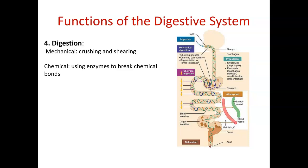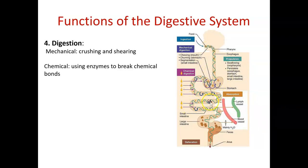We have digestion, and there are two types. Mechanical digestion is physically breaking food down — when our teeth chew food or when our stomach churns. Mechanical digestion occurs mainly in the mouth and stomach. Chemical digestion uses enzymes, which are proteins that break chemical bonds. Chemical digestion primarily happens in the small intestine, with a little in the mouth and stomach. Most of the enzymes for chemical digestion actually come from the pancreas.